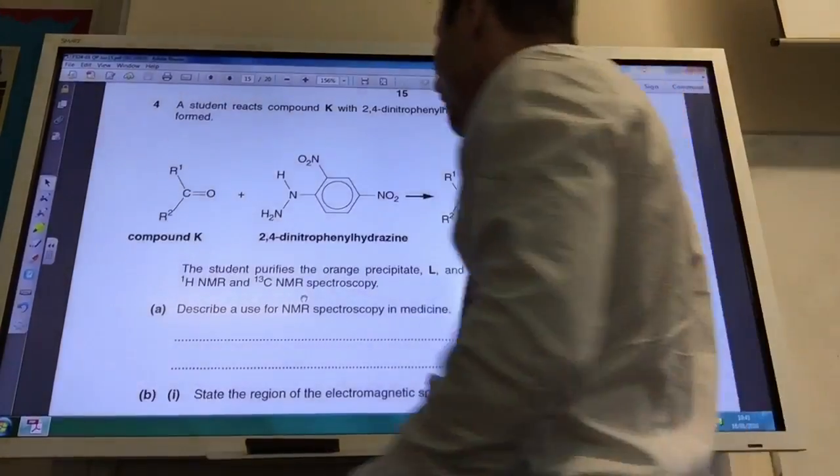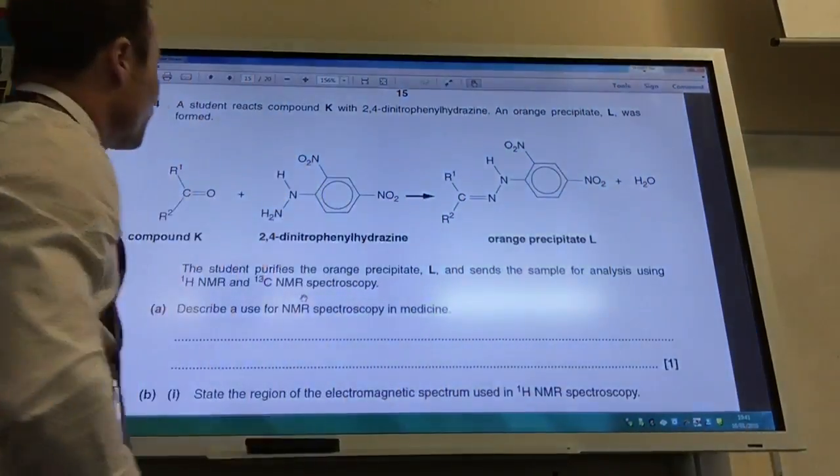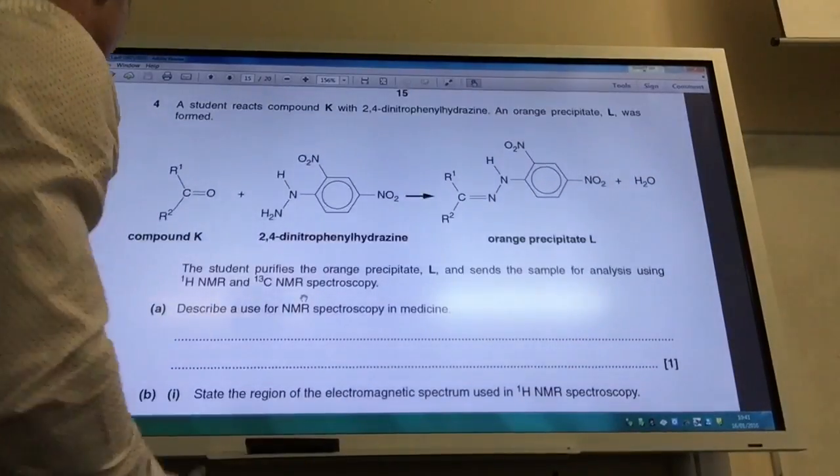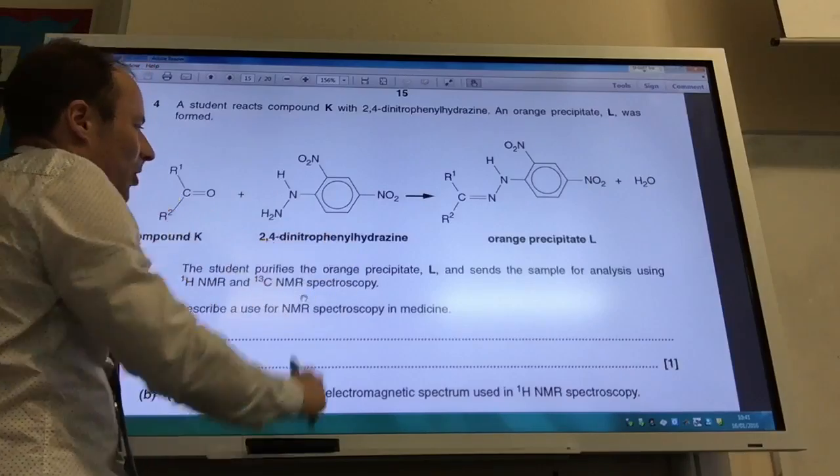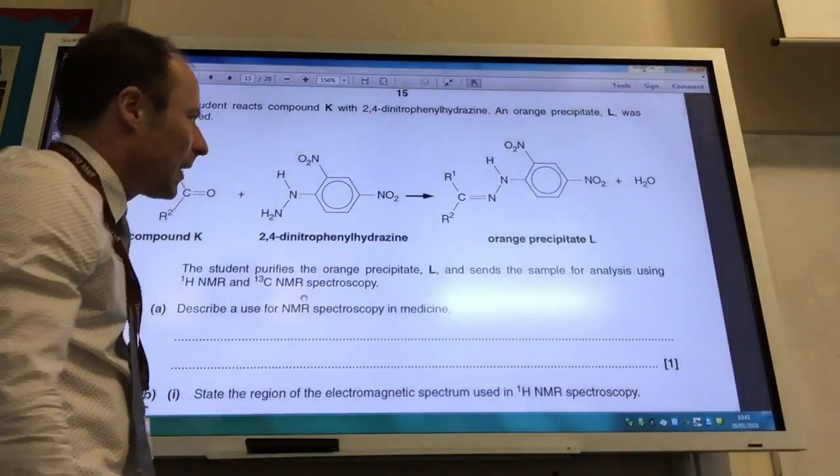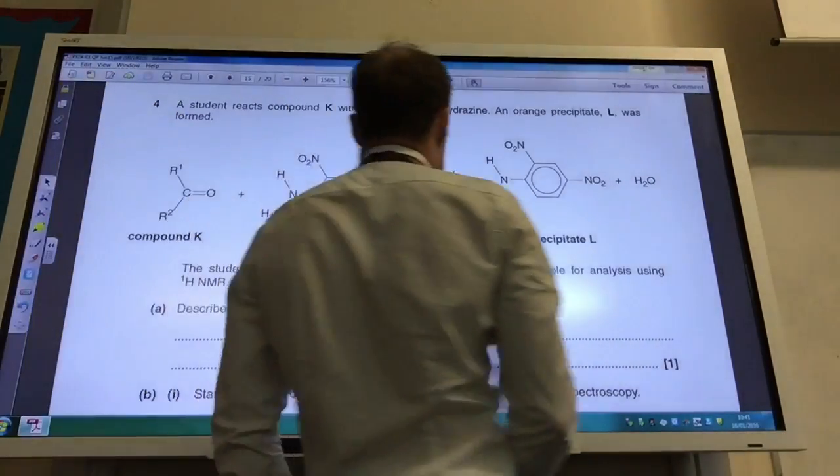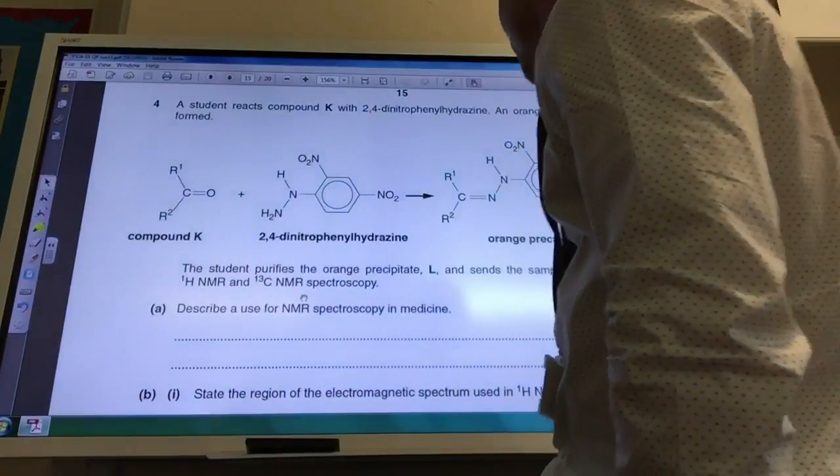Okay, so this question starts off fine and dandy, it gets a little bit scary later on. But anyway, we've got compound K of which we've got four different R groups coming up there. 2,4-dinitrophenylhydrazine, they've given you the structure of that and they've given you the orange precipitate there, L.